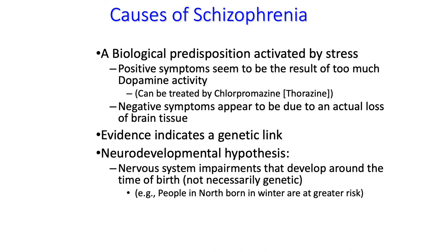For quite some time there was debate about whether schizophrenia was entirely due to chemical malfunction in the brain or to psychological stress and conflict. There is now widespread agreement that schizophrenia is clearly a biologically based disorder. A person who develops schizophrenia has a biological predisposition, but it may not manifest unless they experience a severely traumatic or stressful period. The positive symptoms — hallucinations and disordered thinking — appear to result from too much dopamine activity and can be treated successfully with drugs for most people. The negative symptoms, on the other hand, appear to be due to an actual loss of brain tissue and are more difficult to address.